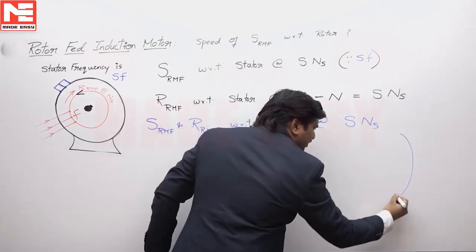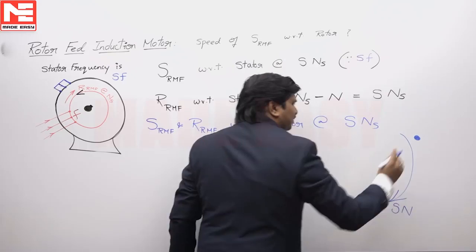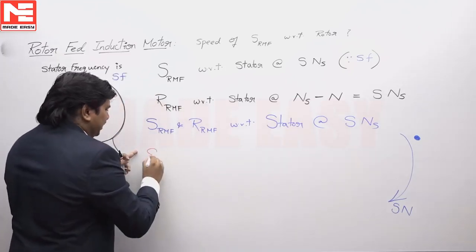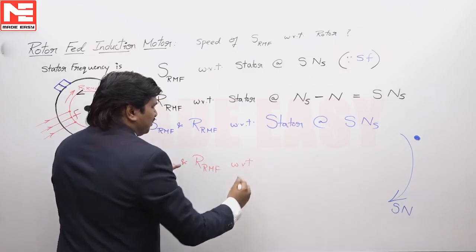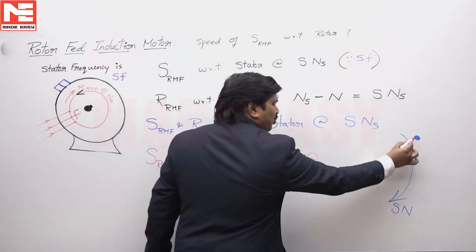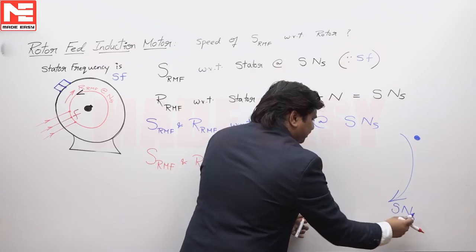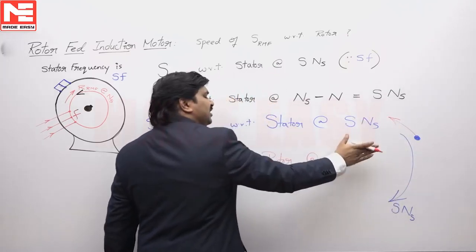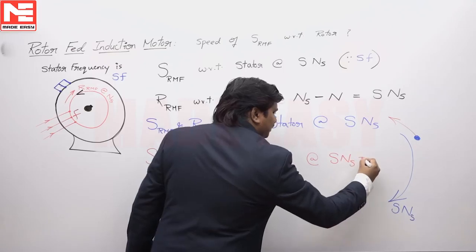Simple logic: when a speed is SNS with respect to a stationary point, we now find the same speed with respect to a rotating point, which is the rotor. If the rotor were rotating in the same direction as the field, we would say SNS minus N. But the rotor is rotating in the opposite direction to the magnetic field. Therefore, the RMF with respect to the rotor is SNS plus N.